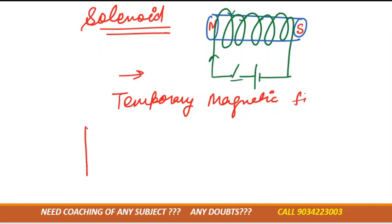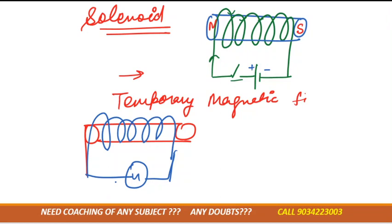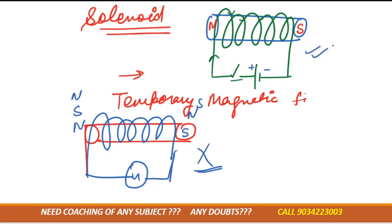Now I want to ask: instead of DC supply, suppose we give AC supply to this winding — then what would happen? Is there any change? With AC supply, the magnet keeps magnetizing and demagnetizing again and again; the poles keep on changing — north, south, then south, north, then north, south. We don't want our poles to keep changing; we want the poles to be fixed. That's why we use DC supply for making the temporary magnet.